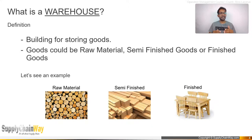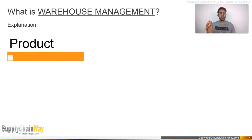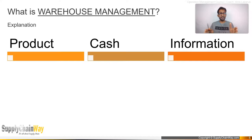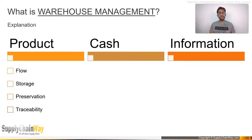In terms of warehouse management, you can ask what is being managed within a warehouse. It follows the same logic as supply chain management: product, cash, and information. Within the product dimension, the flow of product is managed, the storage of product is managed, and preservation and traceability are managed — which are very important. One area where most warehouses struggle is preservation and traceability, which is a key requirement not just within a warehouse but across the entire supply chain.